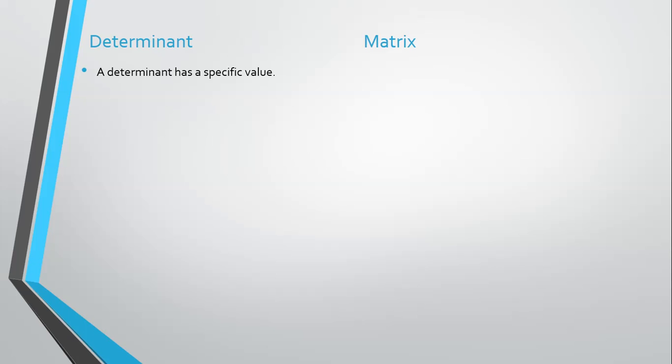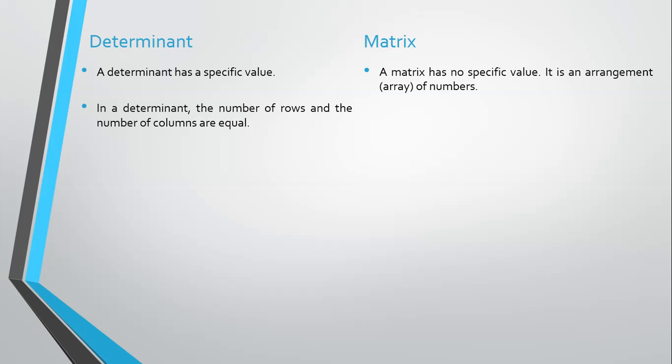A determinant has a specific value. A matrix has no specific value; it is an arrangement or array of numbers. In a determinant, the number of rows and the number of columns are equal. In a matrix, the number of rows may or may not be equal to the number of columns.